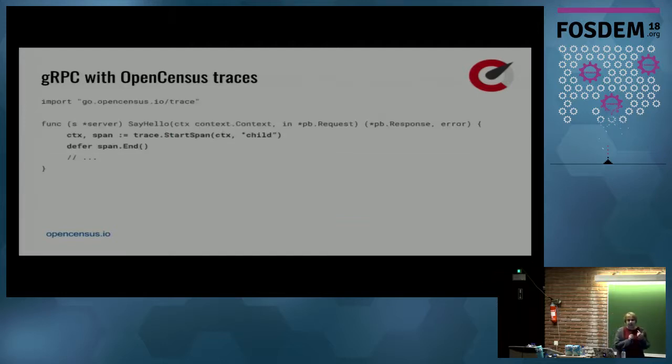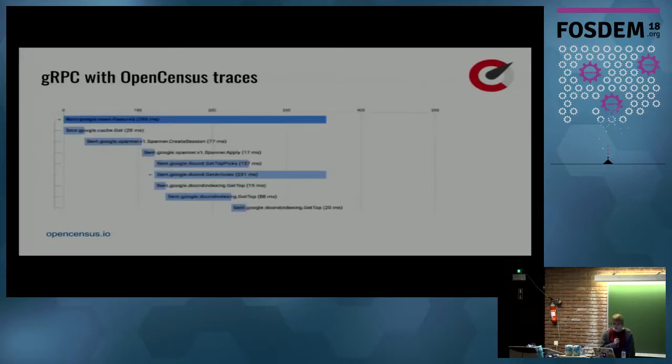The GRPC plugin also automatically creates traces for incoming and outgoing RPCs. But you can also add custom spans using the trace package. Here we are creating a custom child span and finishing it. You can create as many spans you want and annotate them. Just propagate the context and whoever's starting new spans from that context will be able to trace the existing trace. So here's an example of the output, like all the traces collected for an RPC. You can see the internal RPCs made in order to satisfy the original incoming request.